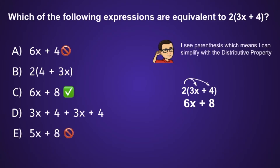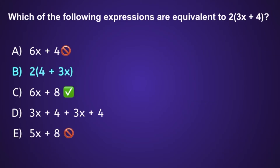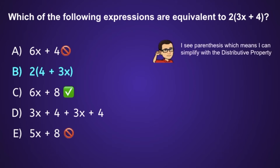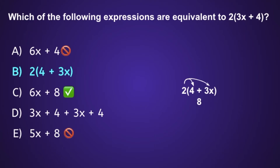Right away we are able to take care of 3 out of those 5 possible answers. Now we just want to see if B and D are correct. Starting with B: 2 times the quantity 4 plus 3x. Once again I notice we have parentheses, so I can use the distributive property. Drawing my arrows, then multiplying: 2 times 4 is equal to 8, bring down the plus sign, and 2 times 3x is equal to 6x, for a final simplified expression of 8 plus 6x.